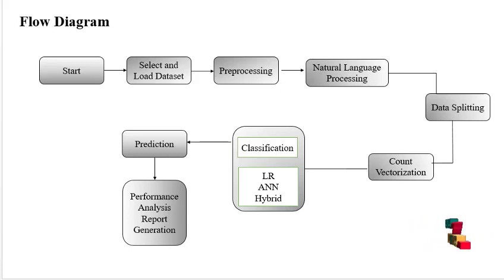Count vectorization: count vectorization is text converted to numerical data. After we have to implement classification. Classification is algorithm implementation. We have to implement machine learning, deep learning, and hybrid model. Machine learning is logistic regression, deep learning is artificial neural network. After that, hybrid model: hybrid model is we have to combine two algorithms, that is LR and ANN, to combine and give the result and accuracy.